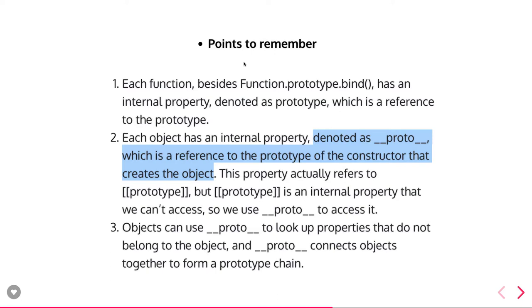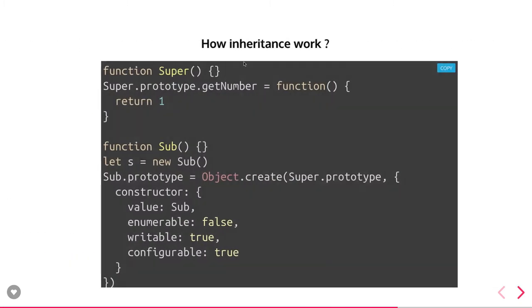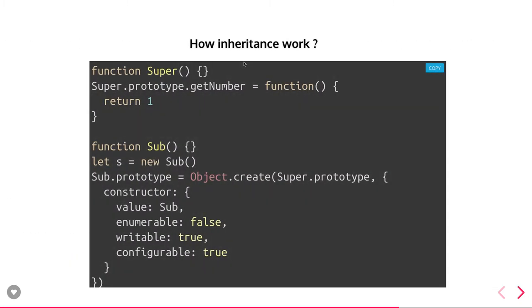In functions, the same prototype chain concept applies. Function A has a prototype which is inherited by function B. Function B defines its own prototype method, which is then inherited by function C. When you try to access some function or property in function C, it checks in the prototype chain — it checks in C, then in B, then in A. That is called the formation of the prototype chain, and you should be aware of this because it is one of the crucial and important questions in JavaScript interviews: how does inheritance work.